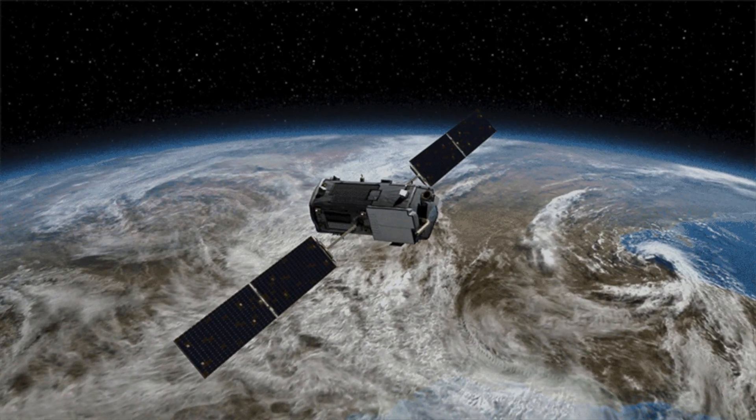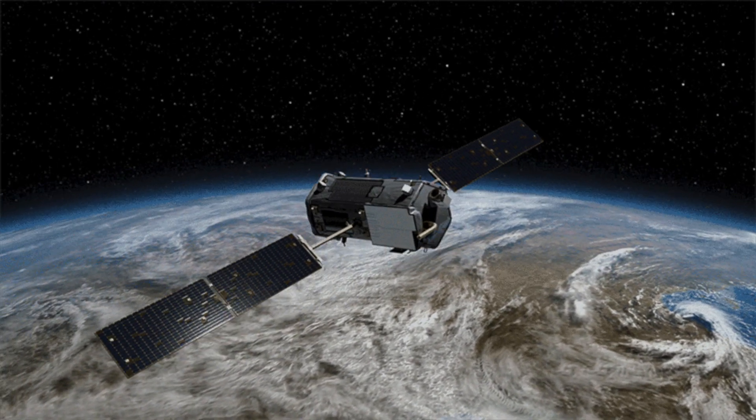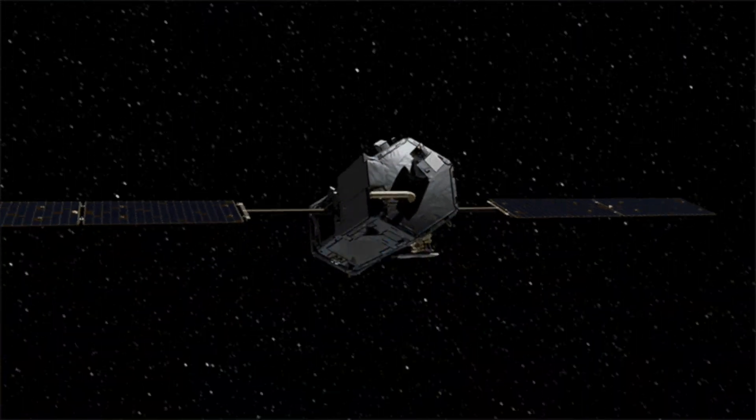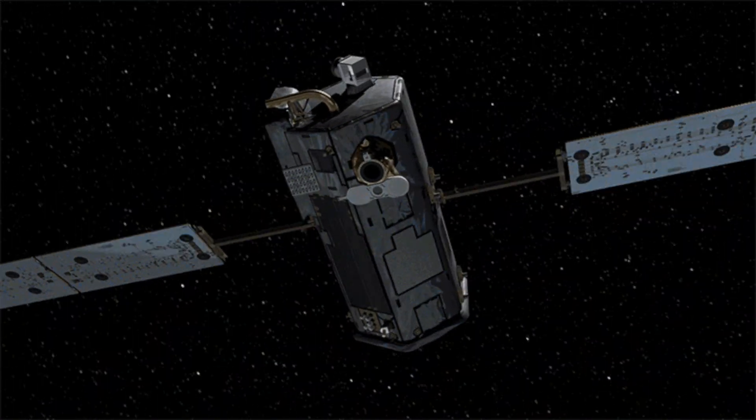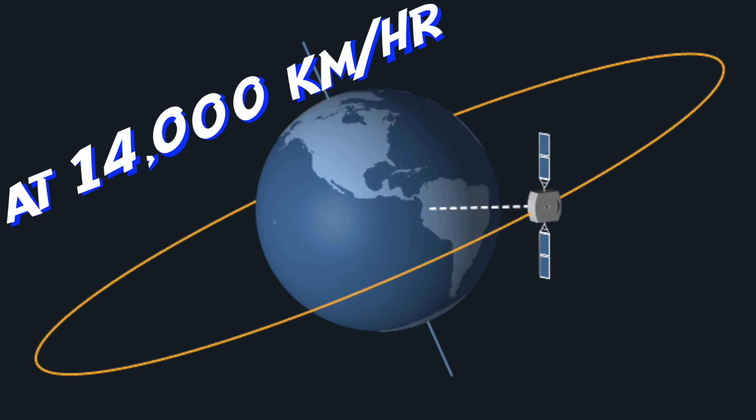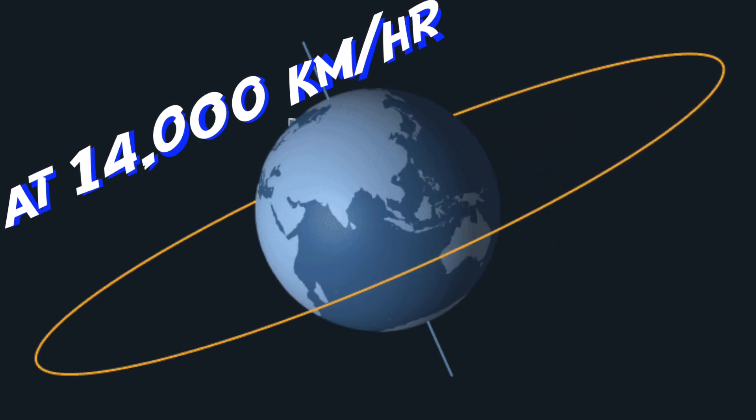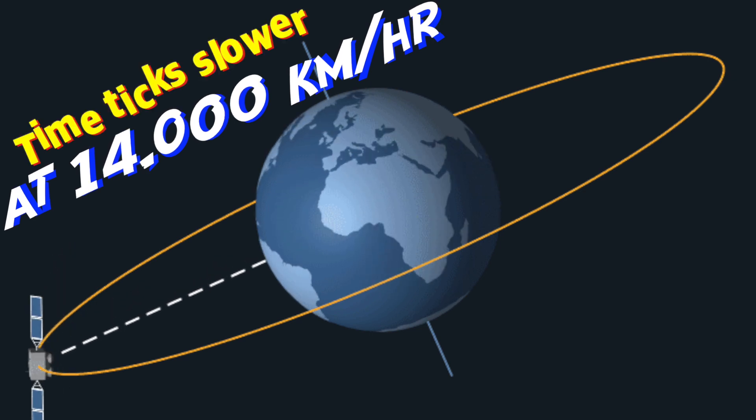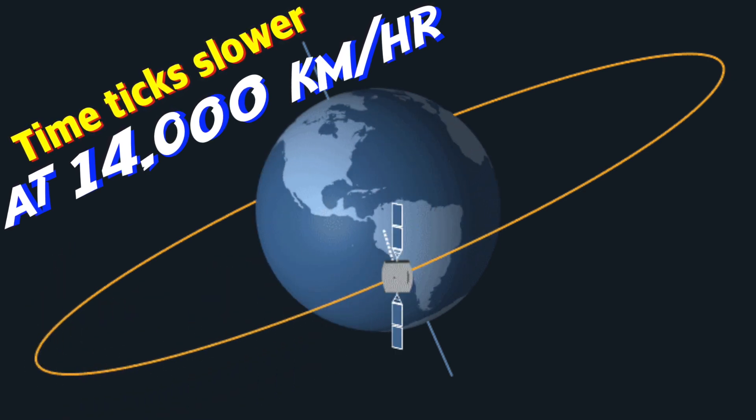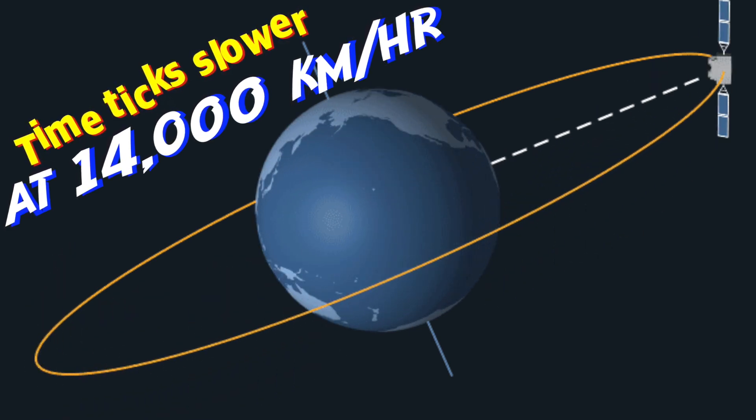Now let's talk about the GPS satellites that revolve around the Earth. GPS satellites are revolving around the Earth at around 14,000 kilometers per hour, which is a very high speed. And as we saw, when you speed things up, time starts ticking slowly.